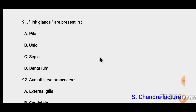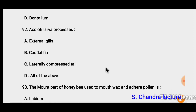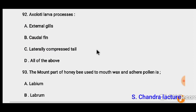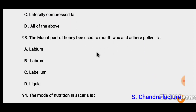Question 91: Ink glands are present in Pila. Question 92: Axolotl larva possesses external gills, caudal fins, and a laterally compressed tail. So the correct option must be all of the above.